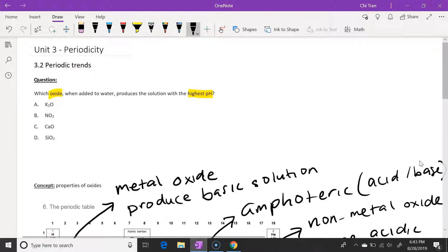So going back to our question, we need to identify the metal that is located to the furthest left on the periodic table, and that would be potassium. So our answer is A.